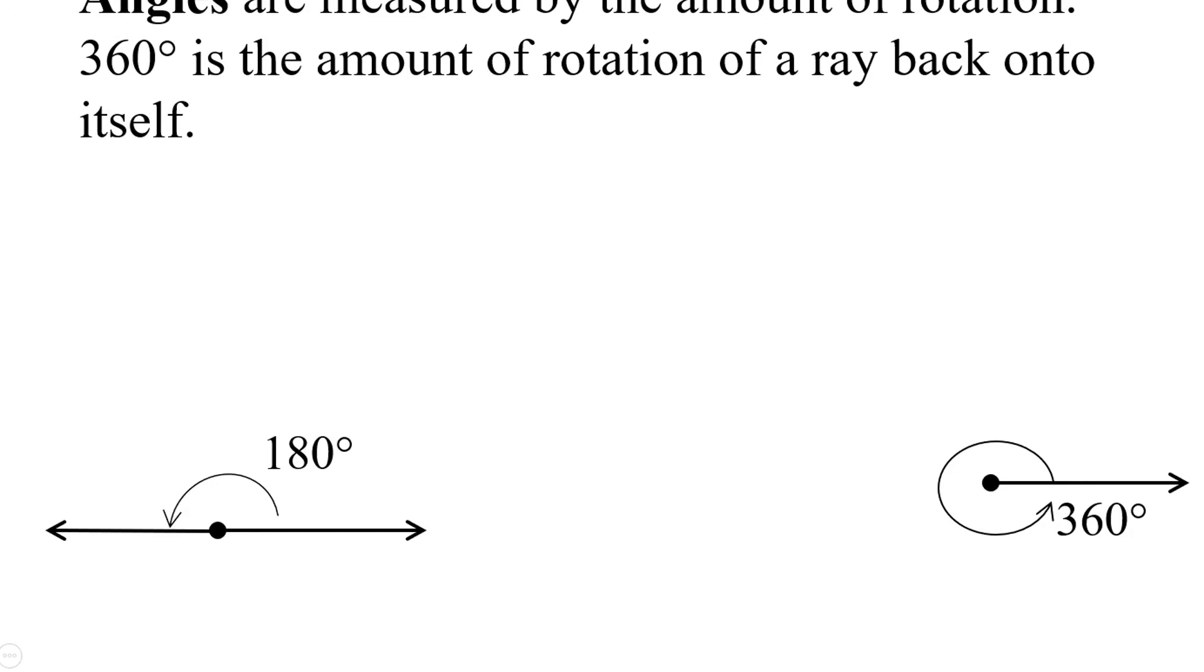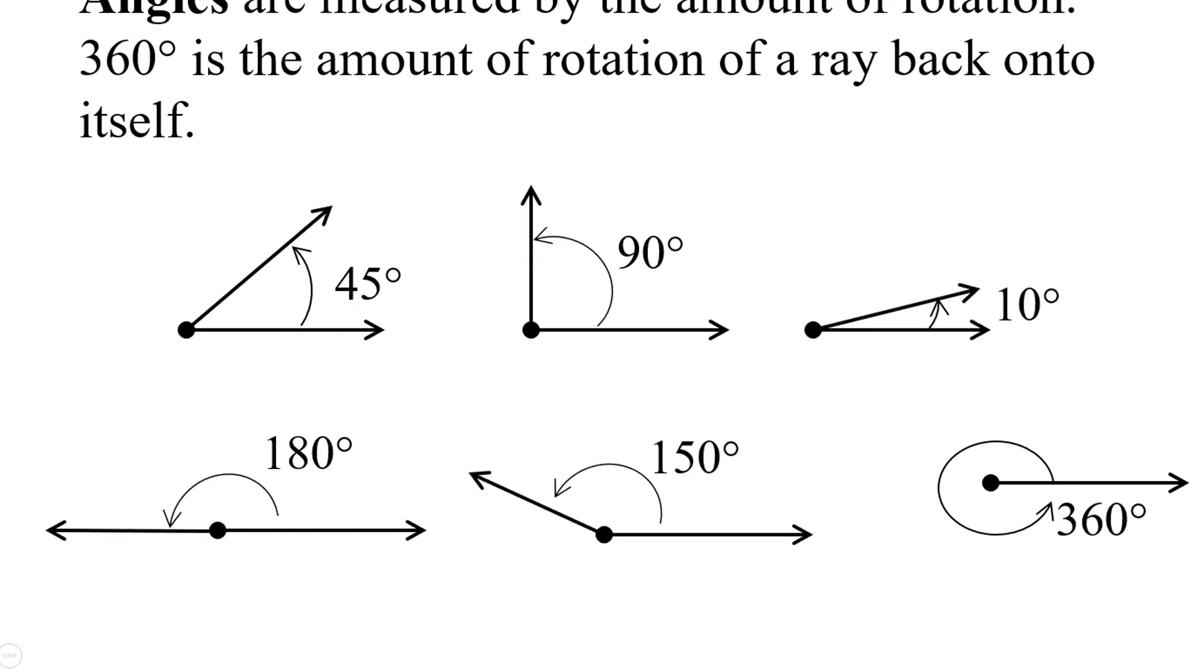180 degrees would be half of a circle. An angle of size 90 degrees would be a quarter of a circle. And we can have sizes in between. 45 degrees would be half of 90. 10 degrees would be a pretty small angle. 150 degrees would be close to 180 but bigger than 90.